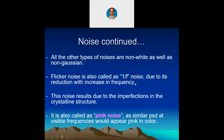Flicker noise is also called 1/f noise because it is predominant when frequency is nearer to zero — from DC when actual transmission starts with AC. Due to its reduction with increase in frequency, it is called 1/f noise. This noise results due to imperfections in the crystalline structure of our silicon devices, so the DC range is affected more. Flicker noise is also called pink noise because similar power spectral density at visible frequencies would appear pink in color.